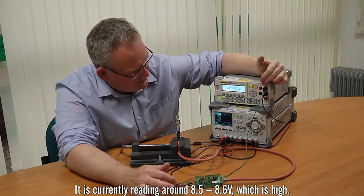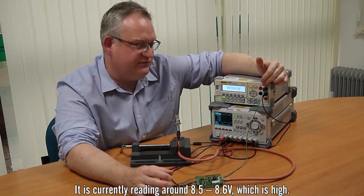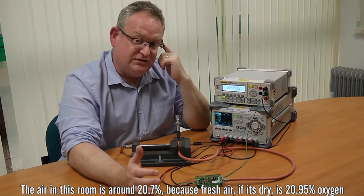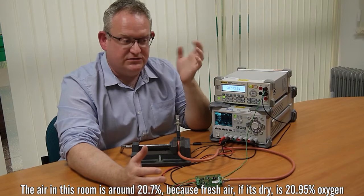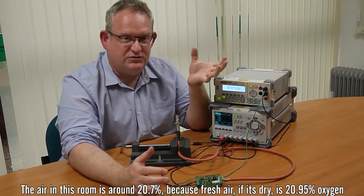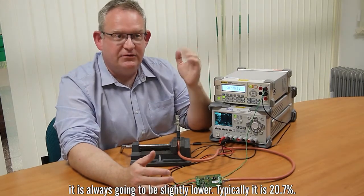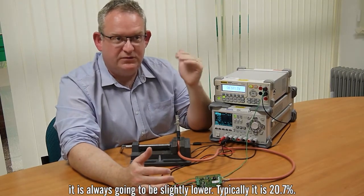It's currently reading around 8.5, 8.6 volts which is high. The air in this room is around 20.7 percent because of course fresh air is, if it's dry, is 20.95 percent oxygen but because there's some humidity in the atmosphere it's always going to be a bit lower and typically it's 20.7 percent.